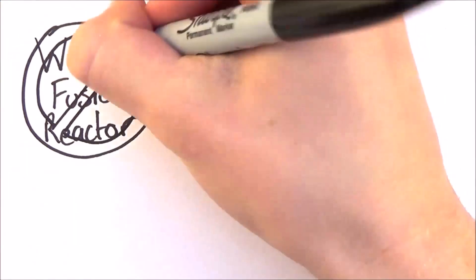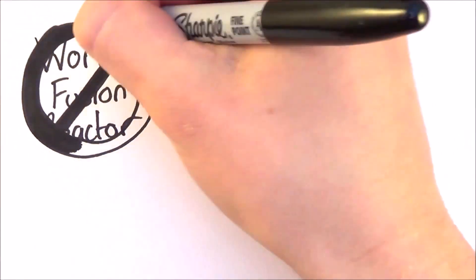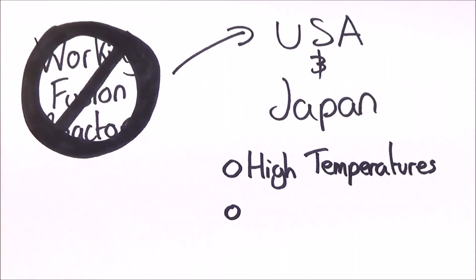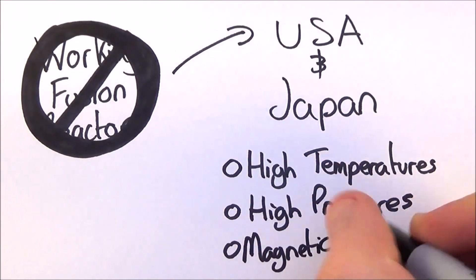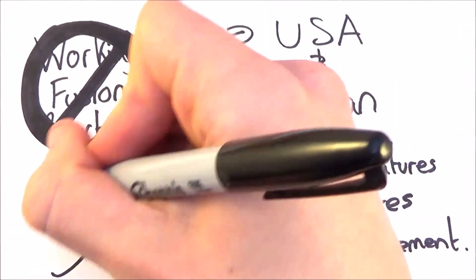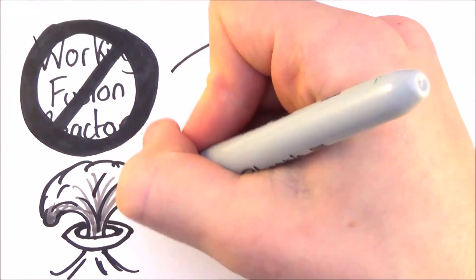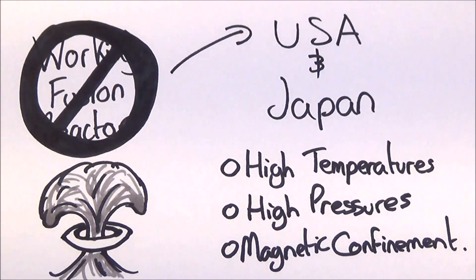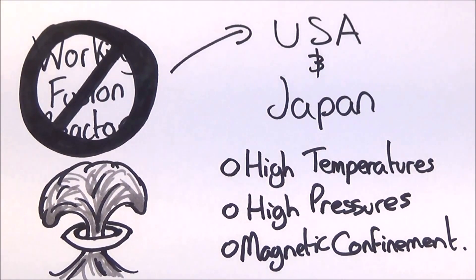A working fusion reactor has been made but not one that we can actually use in society. However, several laboratories across the world, mainly in the USA and Japan, are in the very experimental stages. The recurring issue is to maintain the high pressures, high temperatures and magnetic confinement. This meant that every idea has become unsuccessful. A lot of melting and destruction. However, the leading scientists have promised that a working reactor will be done by 2017. We'll see how that goes.